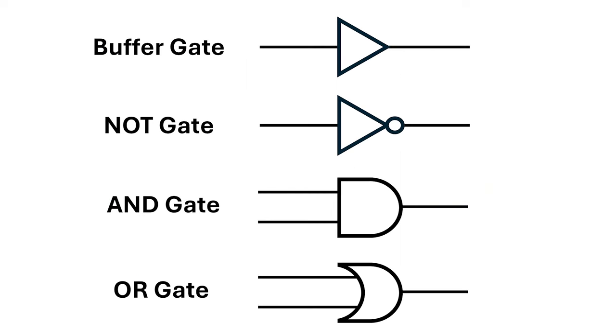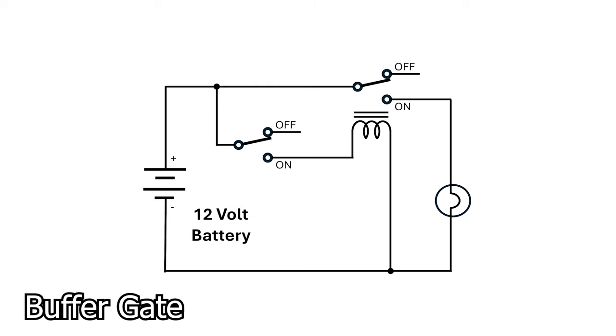Now, it turns out we can implement all of the gates we've seen so far with relays. First is the buffer. When the switch is on, it energizes the magnet in the relay. This moves the armature and flips the relay switch to the on position.